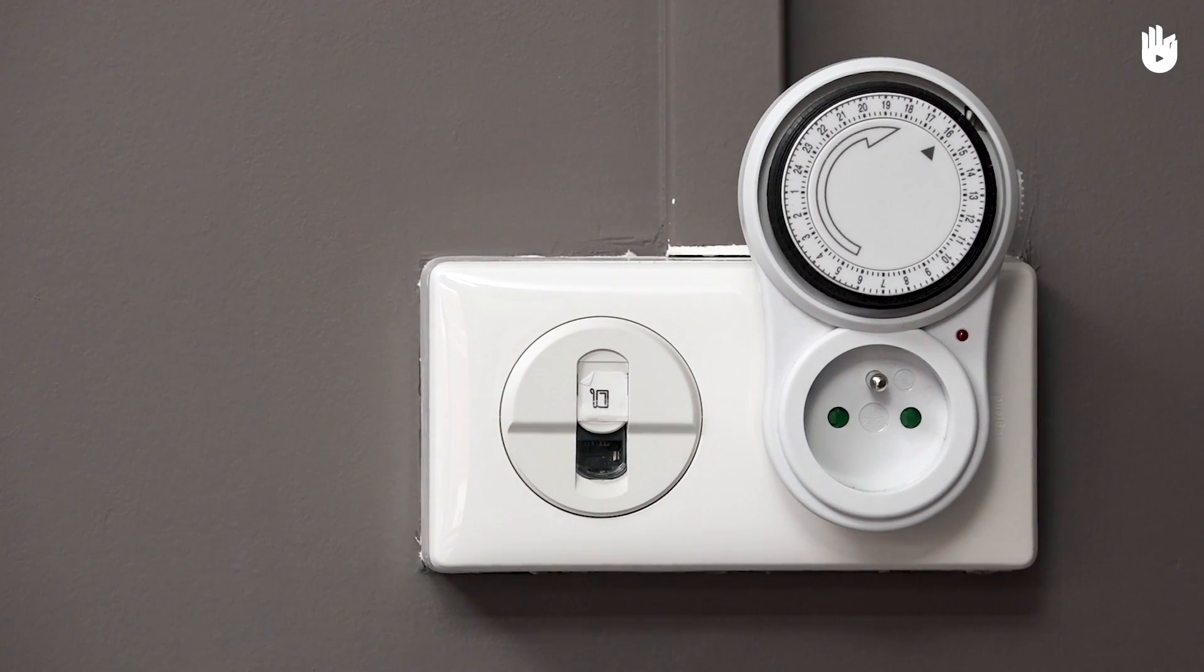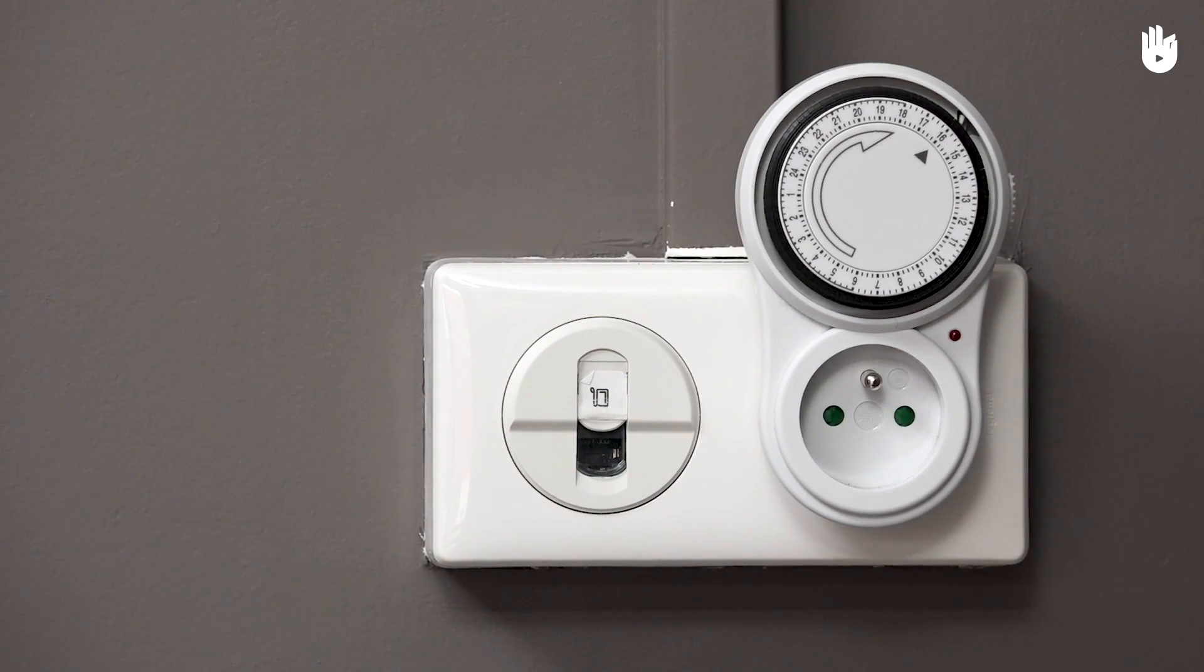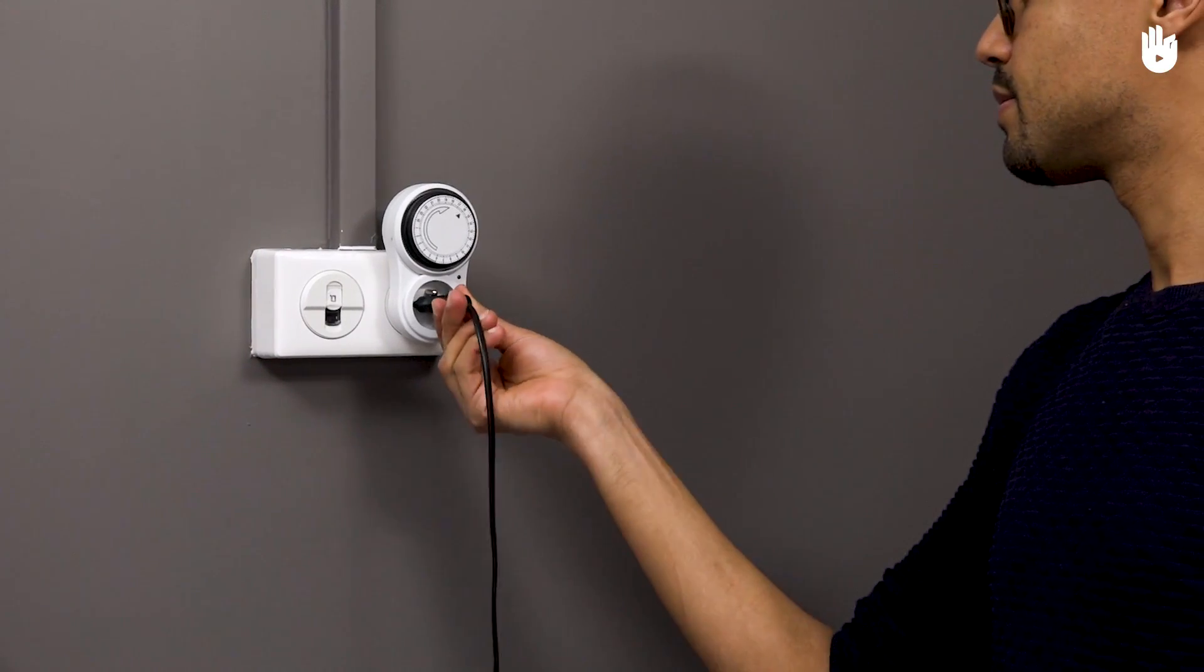You can find a mechanical timer switch for about £4 in the shops. Now you know how to use a mechanical timer switch.